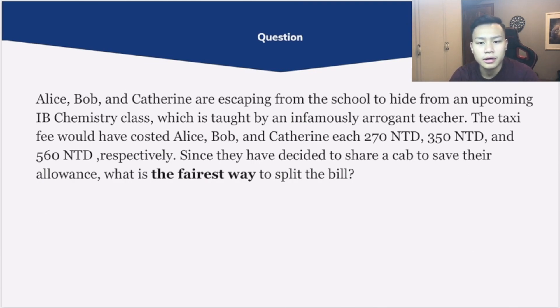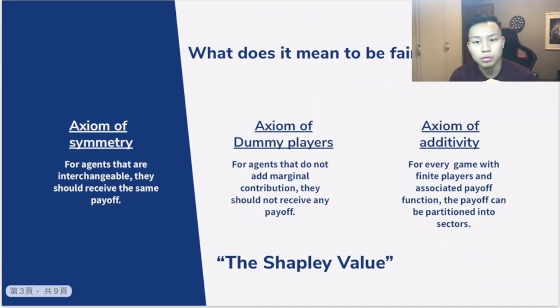In order to answer this question, we must first identify what it means to be fair. According to Lloyd Shapley, when we're talking about fairness, there are three axioms that we must follow: the axiom of symmetry, axiom of dummy players, and the axiom of additivity.